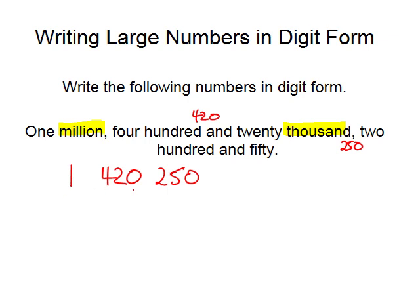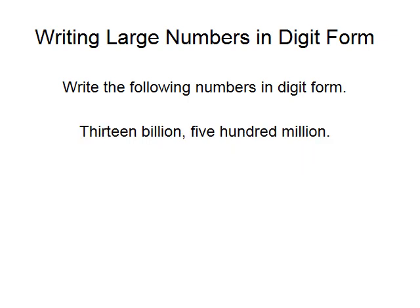The next example is to write 13,500,000,000,000 in digit form. The first thing you notice is there's no mention of thousands, hundreds, tens, or units. Our cue words are billions and millions for leaving a gap. So 13 billion is 13, leave a gap, 500,000,000. We need to state the obvious: there are no thousands and there are no hundreds, tens, or units.